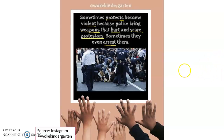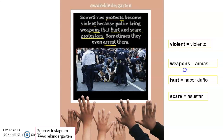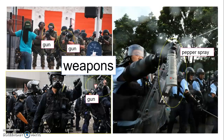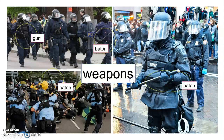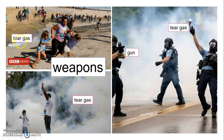Sometimes protests become violent — violentos — because police bring weapons — porque la policía tienen armas — that hurt — que hacen daño — and scare — que asustan — protesters. Sometimes they even arrest them — arrestar. So sometimes protests become violent because police bring weapons that scare and hurt protesters, and sometimes they even arrest them. These are some examples of weapons that police use against people: guns, pepper spray, batons, and tear gas.